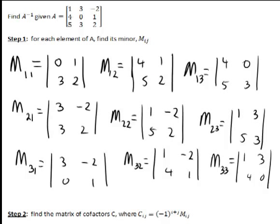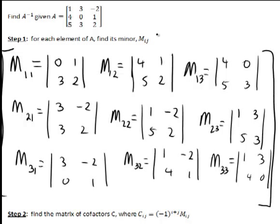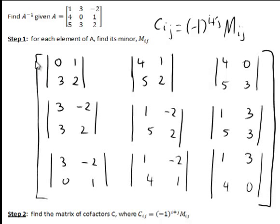The second thing we need to do is for each of these minors, find a related quantity called a cofactor C, where C_ij equals negative 1 to the power i plus j, times M_ij. What we'll end up with is a matrix. I've replaced the M11, M12 labels so that we now have this matrix of determinants represented by our minors.